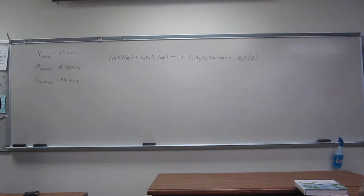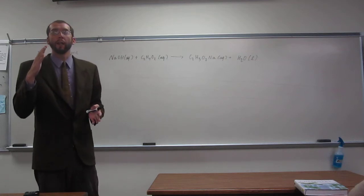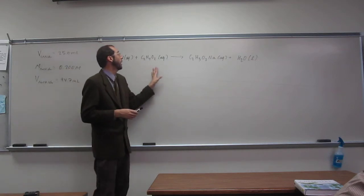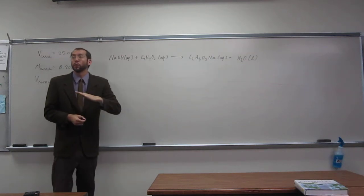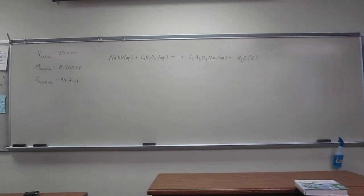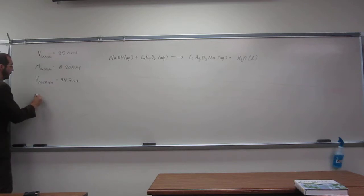So, the first thing I guess we want to remember is that when we're titrating something, it takes a multiple ratio of the things that are presented in the balanced chemical equation to reach that equivalence point. So, what we see here is that we've got a molarity of NaOH, a volume of NaOH. So, we should, from those two things, be able to get the moles of NaOH. We've got the volume of acetic acid, but we don't have the moles. And it's looking for the molarity of the acetic acid solution.